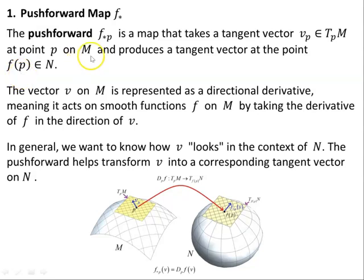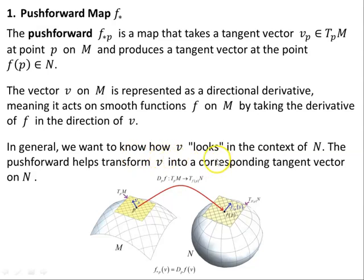The push forward F★_P is a map that takes a tangent vector V_P belonging to the tangent space to M at point P and produces a tangent vector at the point F(P) belonging to N. The push forward of the vector V at point P equals the Jacobian matrix of F acting on V, evaluated at point P. That was all the subject of the previous videos — so this is nothing more than a reminder.